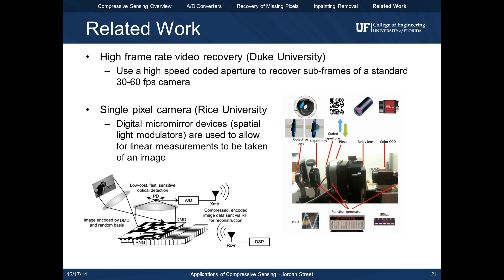Researchers from Duke modified a standard 30 frames per second camera with a high speed coded aperture and are able to extract video at the coding rate using compressive sensing techniques.